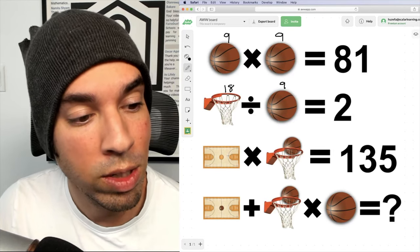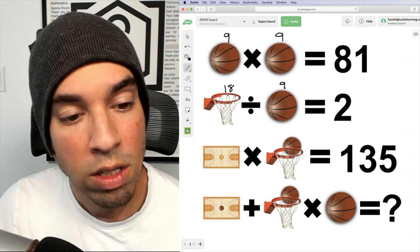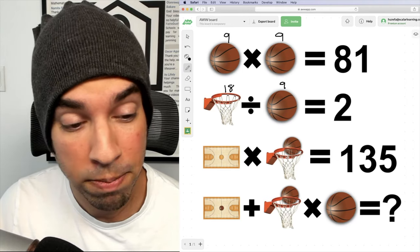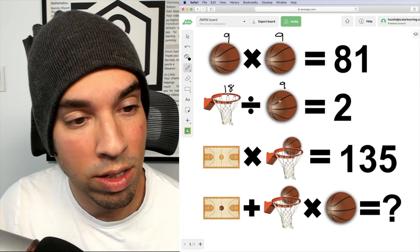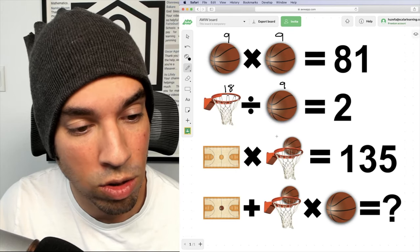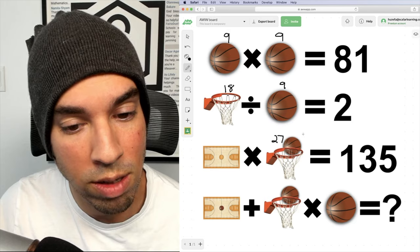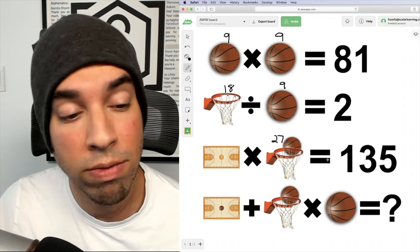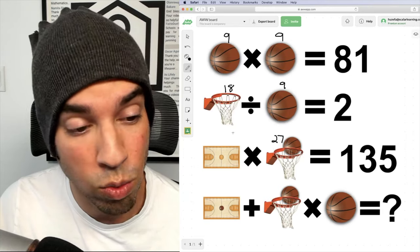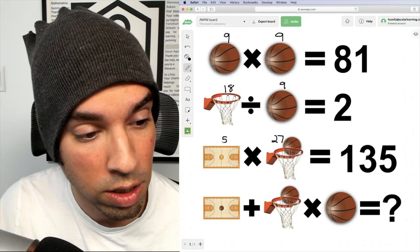Now we come down here and we see that the basketball court times the ball plus the hoop is 135. So what is the ball plus the hoop? The ball is nine, the hoop is 18. So add those together and that's 27. So what times 27 is 135? Alternatively, we could ask 135 divided by 27 is what? And that of course is five. Now we have all the values we need to solve.